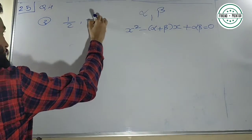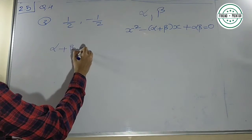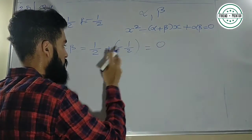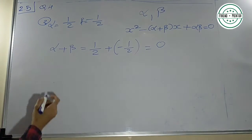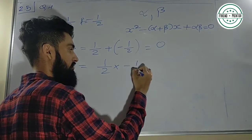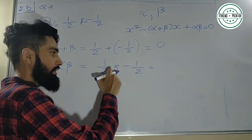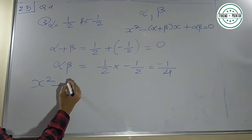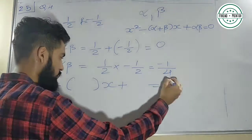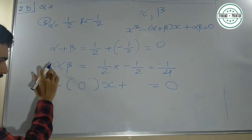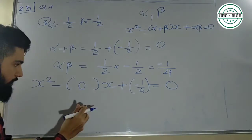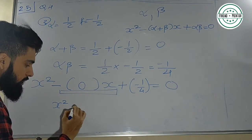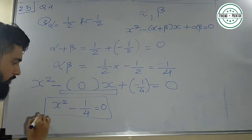The third one: roots are 1/2 and minus 1/2. So alpha = 1/2 and beta = minus 1/2. Alpha + beta = 1/2 + (−1/2) = 0. Alpha × beta = 1/2 × (−1/2) = minus 1/4. Equation: x² − 0·x + (−1/4) = 0, yeh term 0 hai matlab koi matlab nahi. So quadratic equation is x² − 1/4 = 0.